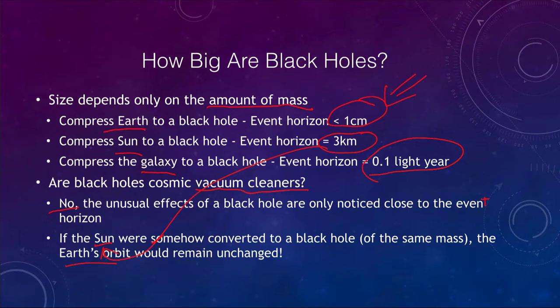the Earth's orbit would be exactly the same. We would continue to orbit around it with a period of one year and nothing would actually change in terms of orbit. However, it would get awful cold and awful dark — the Earth would freeze, the atmosphere would freeze down to the Earth, and we'd lose all our source of heat and light. But the Earth's orbit would be completely unchanged, because we are 93 million miles away from something whose unusual effects only really matter within a couple miles of it.